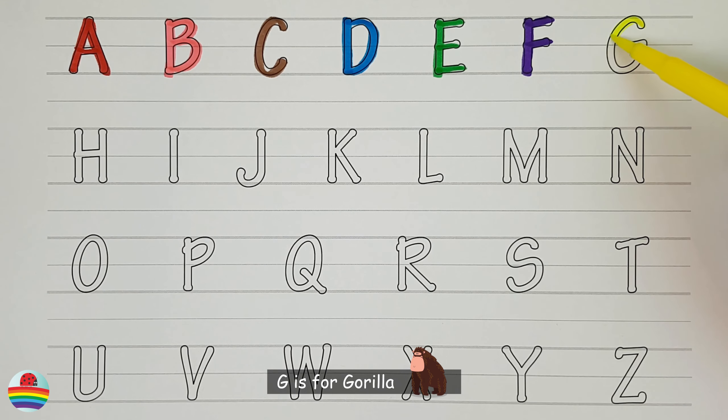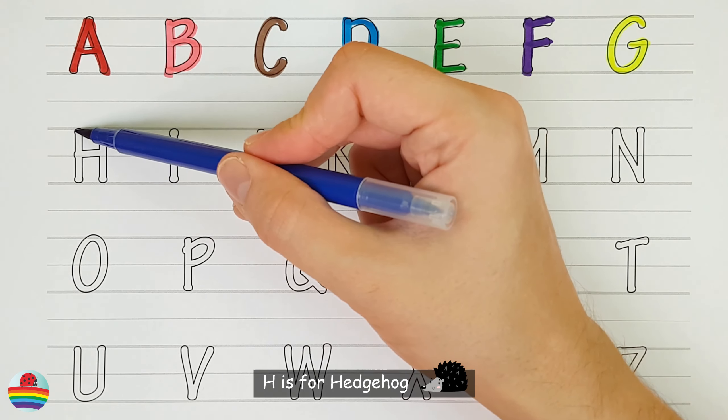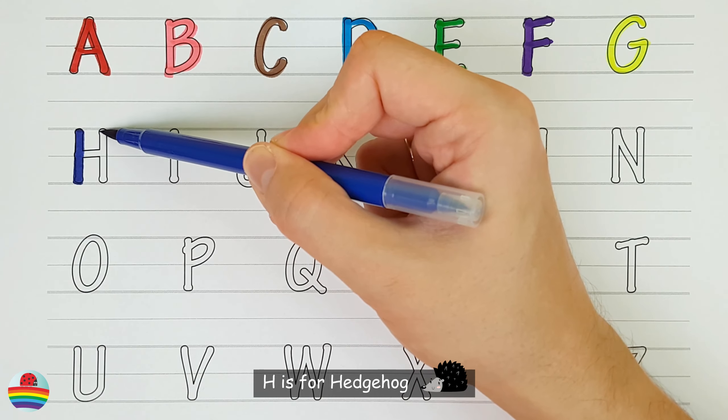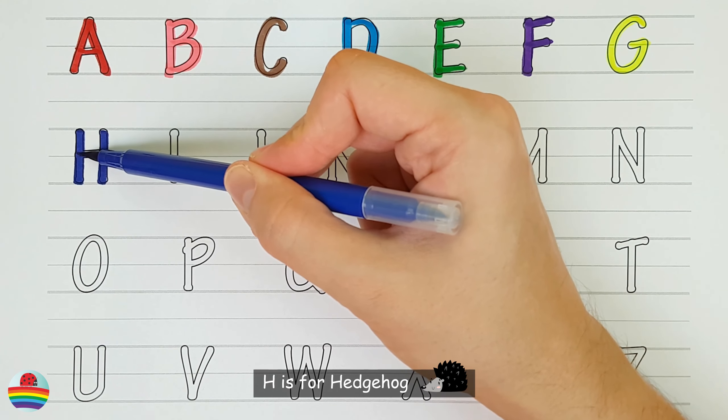G. G is for gorilla. H. H is for hedgehog.